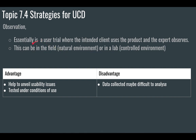Observation is a user trial where the intended client uses the product and the expert observes. It's basically watching somebody use the product or prototype you've designed. This can be done in the field or in a controlled area like a lab. An advantage is it helps unveil usability issues — if someone is struggling to interact with your product, you can see that firsthand. It's tested under conditions of use. A disadvantage is that the data collected may be difficult to analyze, as you may collect a huge amount of data that's hard to break down and take lessons from.